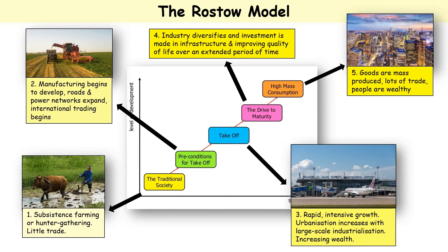And then finally, the most developed countries in the world - such as England, France, Japan, USA, Germany and Canada - reach the age of mass consumption. In these countries, goods are mass produced for wealthy people who want lots of goods within their houses, and there's lots of trade going on to provide people with these goods. That is what Rostow believed each country has to go through to become developed.